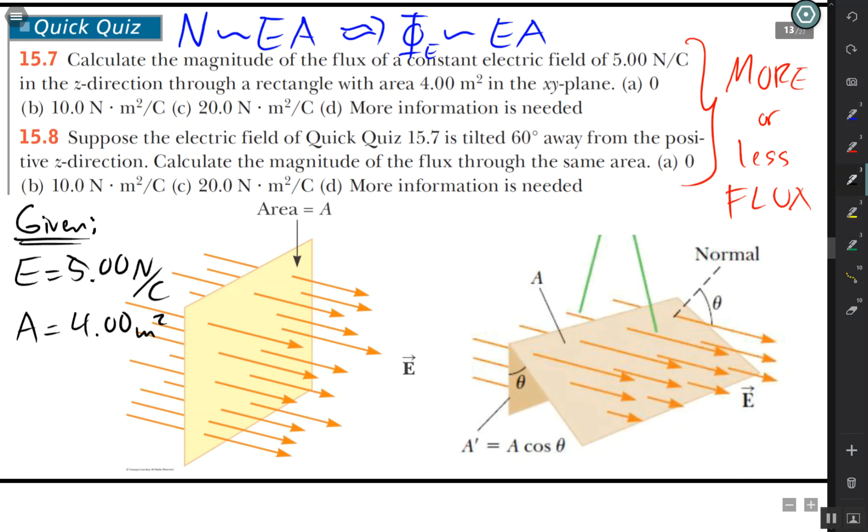And the angle is actually the angle between the normal and the electric field lines. So the angle for this first situation is actually zero degrees. That's my symbol for zero.